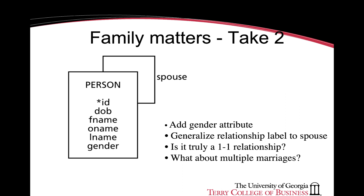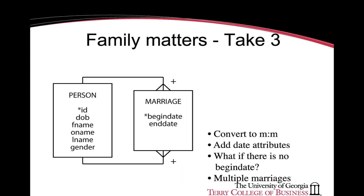The relationship is named with a generalized label called spouse. We can also add gender to signify the man or the woman of the entity instances. But this is not truly representative of real life. In modern familial situations, there are in fact multiple marriages, so the entity does not have a one-to-one relationship with itself but in fact has a many-to-many relationship with itself.